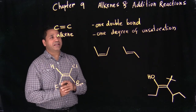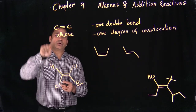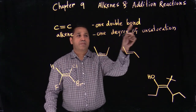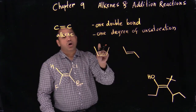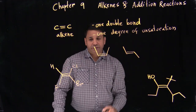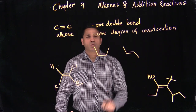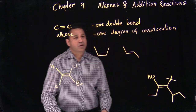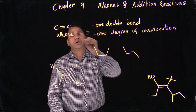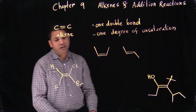Let's have a little background about alkenes. The functional group is the carbon-carbon double bond. It can be one double bond, also referred to as one degree of unsaturation. A double bond also means a degree of unsaturation — keep that in mind.